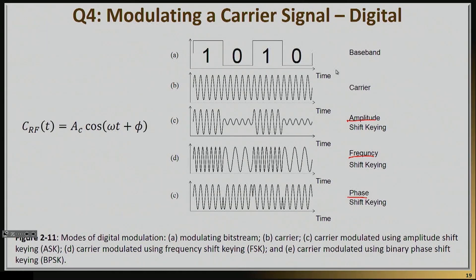For example, in the very simple amplitude shift keying technique, you can assign a certain amplitude of the signal for a bit of one and almost zero amplitude for a bit of zero. Similarly, you can assign a high frequency for a bit of one or a low frequency for a bit of zero.